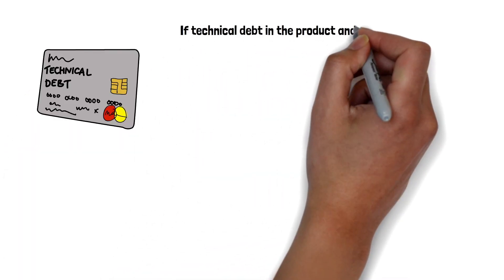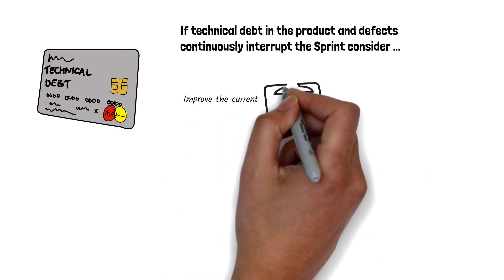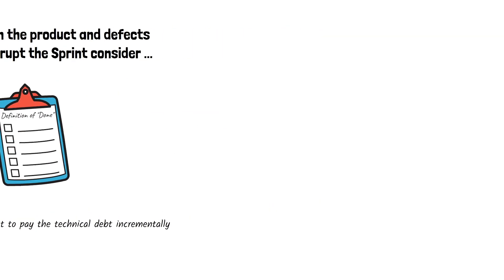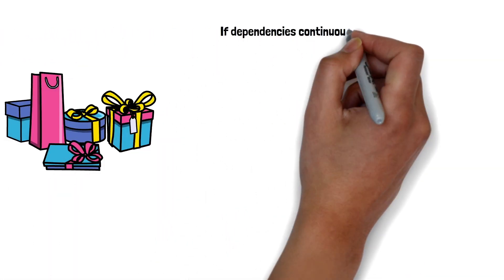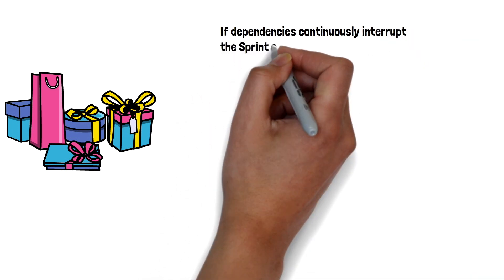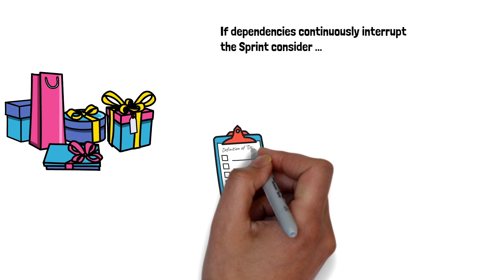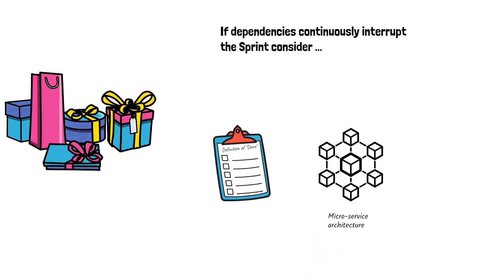If unplanned work continuously emerges in the middle of the sprint because of technical debt or defects in the product, consider improving the current definition of done and allocate time every sprint to pay the technical debt incrementally. If it emerges because of dependencies with other products developed by another team, consider updating the definition of done and removing those dependencies by converting the architecture to be more loosely coupled — for example, using microservice architecture.